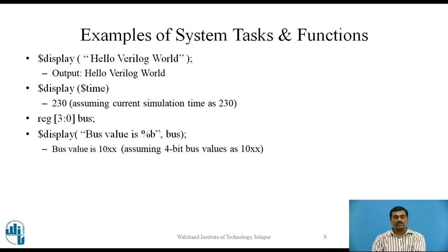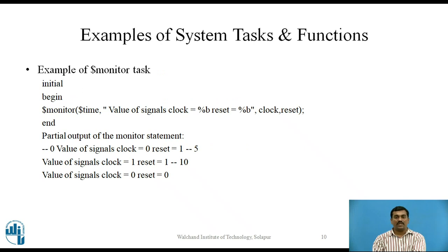In the third example, assuming a 4-bit bus value as 10xx where x stands for unknown value, it is shown by the display task since the %b format specifier is used for displaying the value of a 4-bit variable 'bus' which is of type register. An example of monitor task is also given, which monitors the time and value of signals clock and reset. Typical sample output shows that clock toggles every 5 time units and reset goes down at 10 time units.